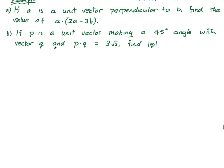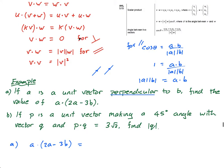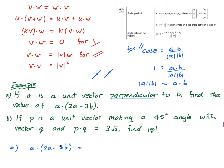However, they can obviously give you quite complicated questions. This one is fairly tricky — it's not that straightforward. So part a: if a is a unit vector perpendicular to b, find the value of a dot (2a minus 3b). I'm going to write that out. Using my properties of scalar products — and this multiplies out as you would expect — you get 2(a dot a) minus 3(a dot b). That's it.